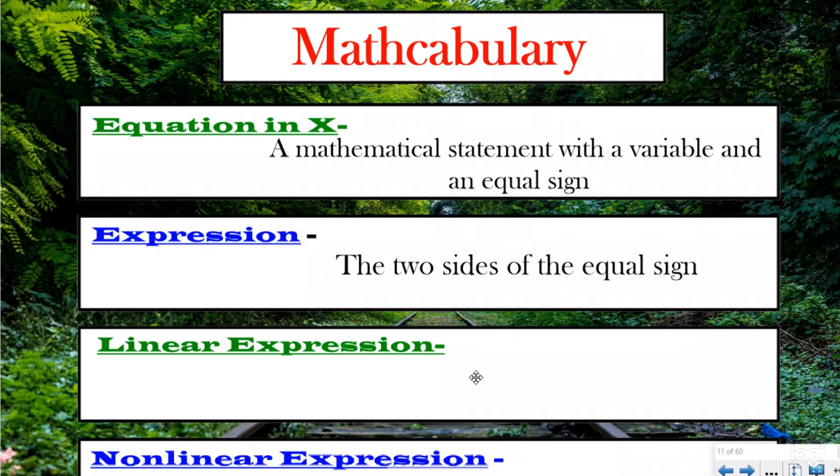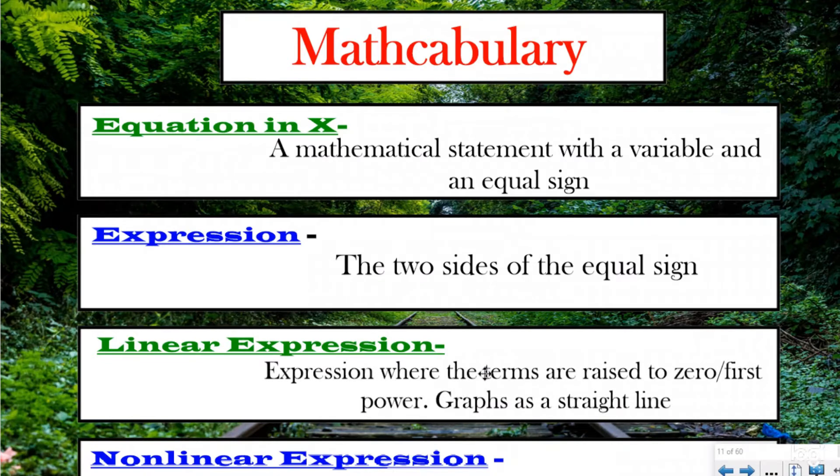A linear expression is an expression where the terms are raised to zero or the first power. In other words, they're not squared or cubed or raised to any power other than zero or one, which keeps them as one or itself. When you graph it, what makes a linear expression very special is it graphs as a straight line. If you plot the points on an ordered pair chart and put them onto a coordinate plane, they would graph and make a straight line.